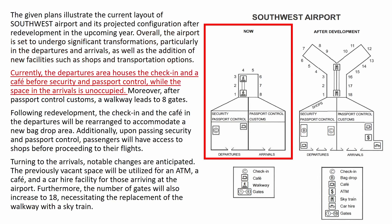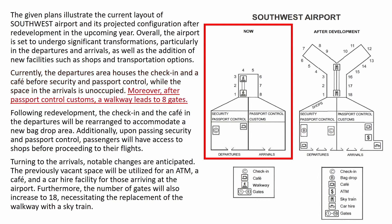Now I'll write the current state. 'Currently, the departures area houses the check-in and a cafe before security and passport control, while the space in arrivals is unoccupied.' Continuing with the second part: 'Moreover, after passport control and customs, a walkway leads to eight gates.'